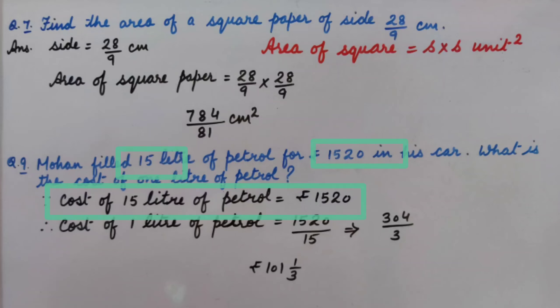Because cost of 15 litre of petrol is given as Rs. 1520. Therefore, cost of 1 litre of petrol we can find out by dividing 1520 by 15. So we get cost of 1 litre of petrol is Rs. 101, 1 by 3.